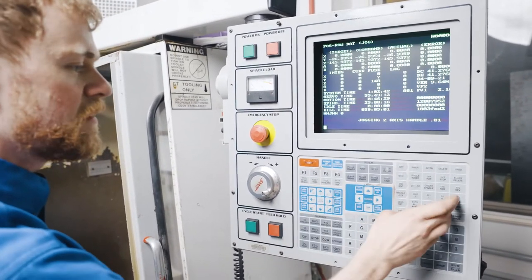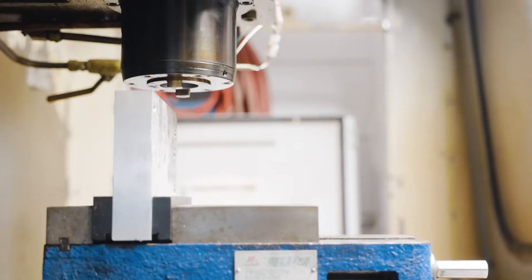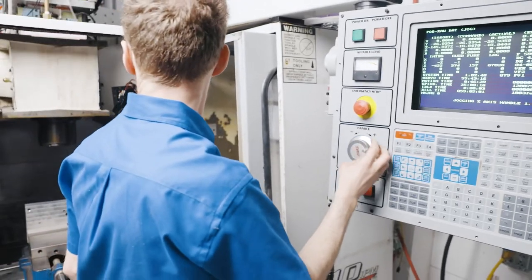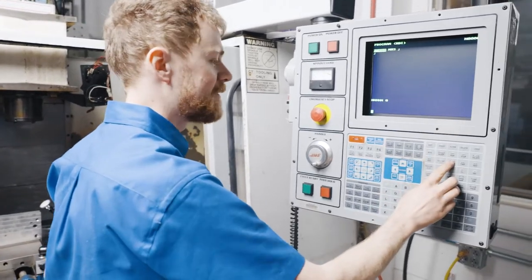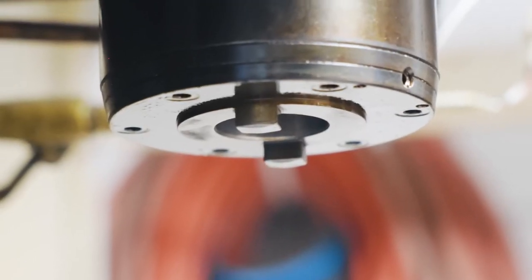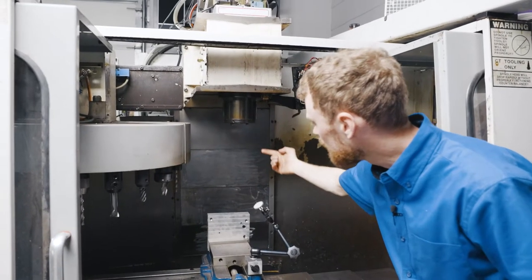Now I'm going to hand jog Z out of the way. Now I'm going to, in MDI, tell it to orientate the spindle. And there we go. The spindle is orientated right in line.